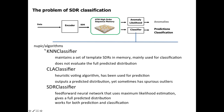Currently, there are three classifiers under NuPIC algorithms. The first one is the k-nearest neighbor classifier, which is typically used for categorical classification. It maintains a set of template SDRs in memory, but does not evaluate the full predictive distribution — it just gives you the best match using KNN. It's very simple, but may not work very well for online prediction tasks. The CLA classifier is the one we have been using for predicted values.